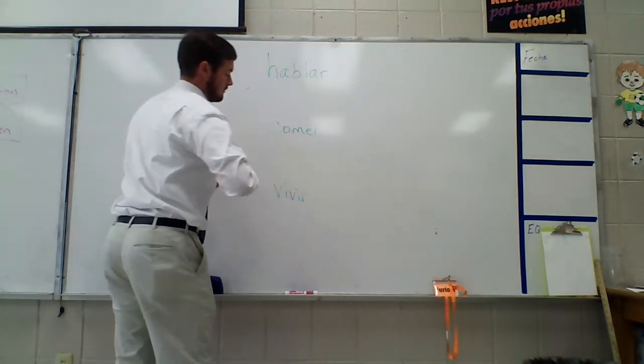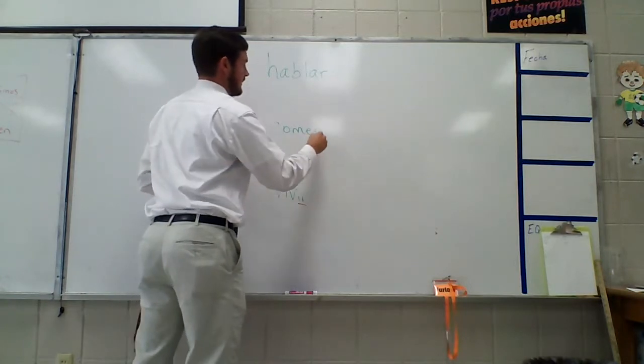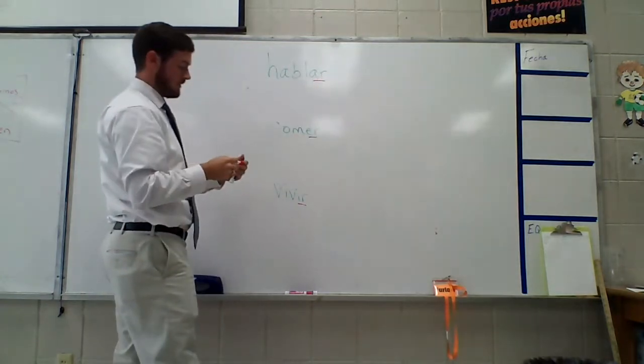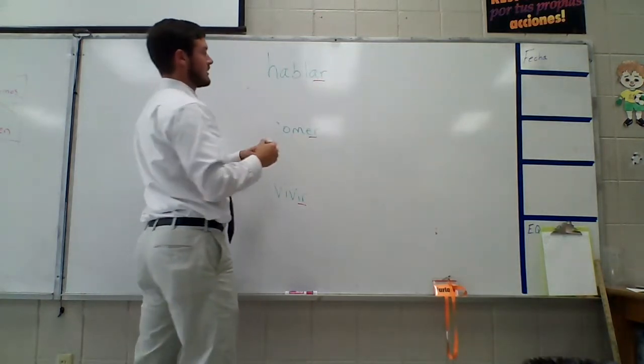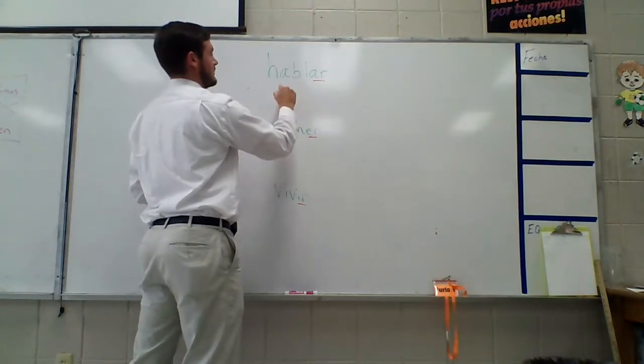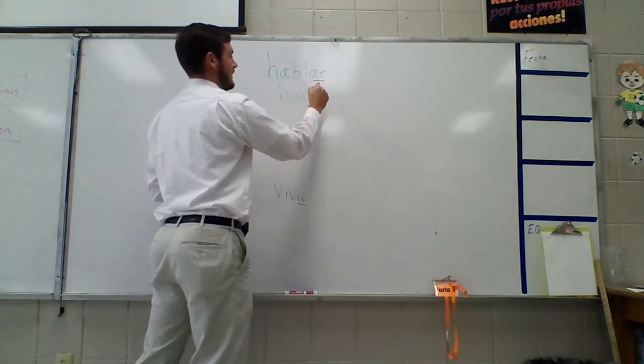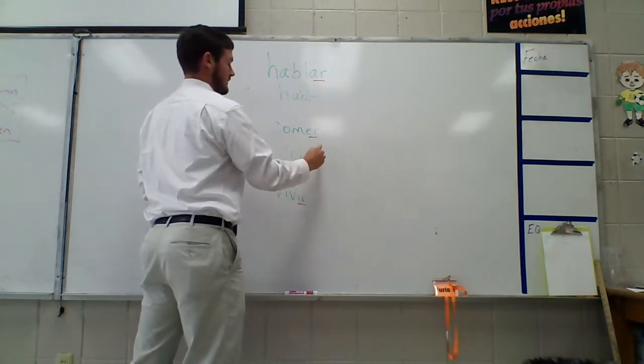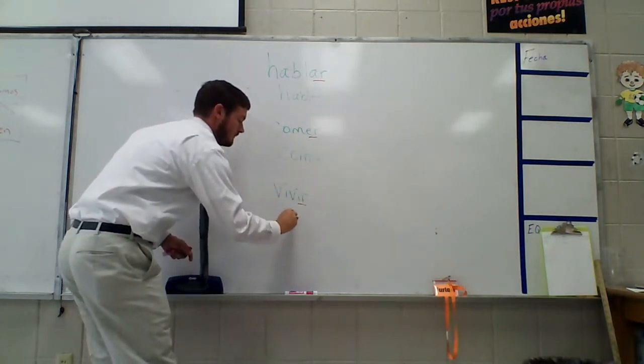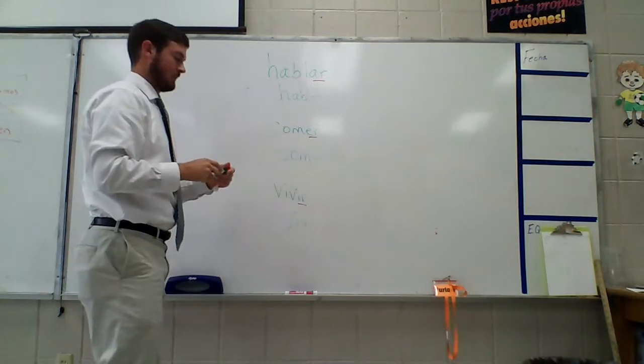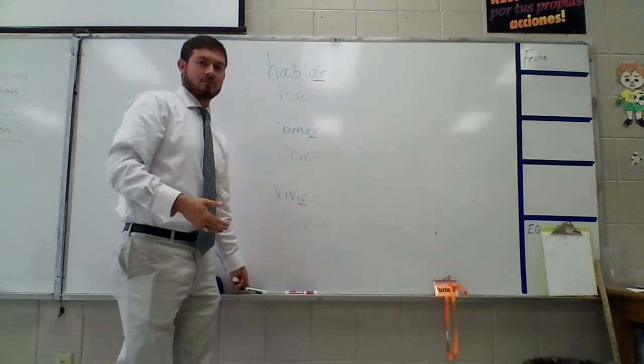And what we do is we remove basically our last two letters. The AR, the ER, the IR, and we're left with what is called the stem. So for hablar, our stem would be H-A-B-L, for comer C-O-M, for vivir V-I-V. So these are our stems.